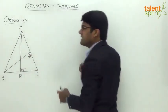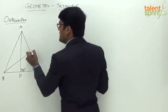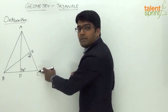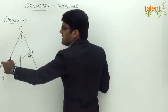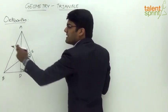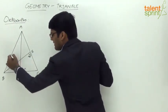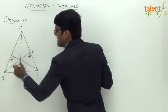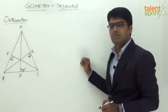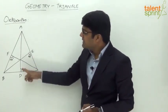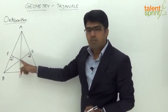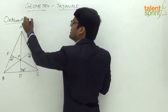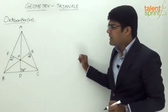The perpendicular AD is the altitude. Likewise, from vertex B, if you drop a line such that it makes an angle of 90 degrees with the opposite side AC, that becomes the second altitude BE. The third altitude CF is the line from C making an angle of 90 degrees with the opposite side.